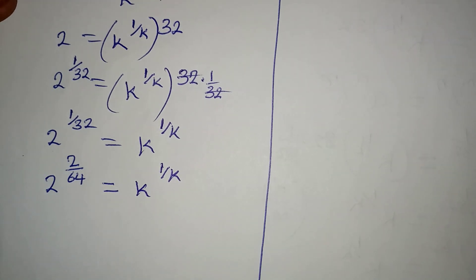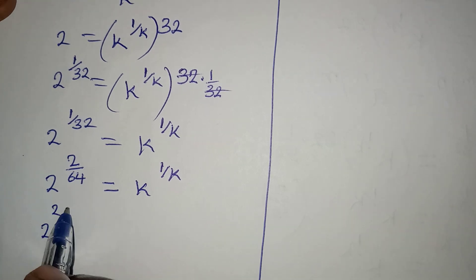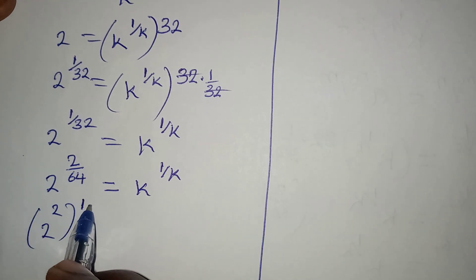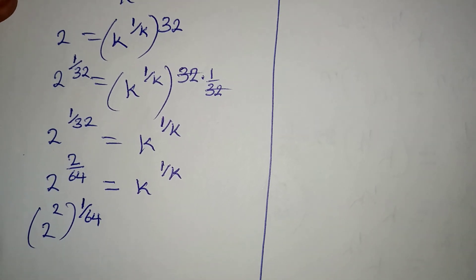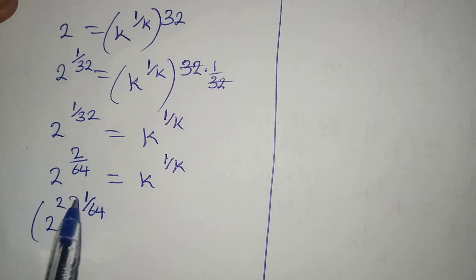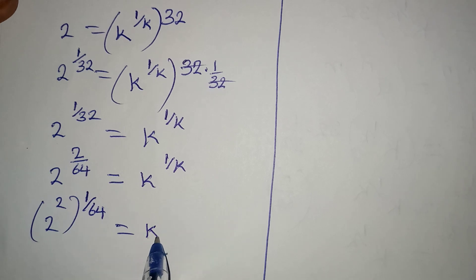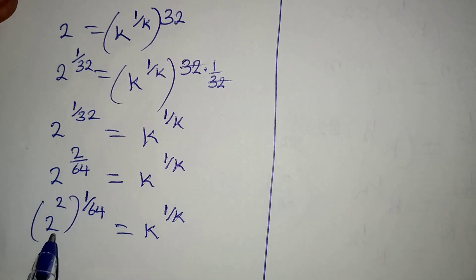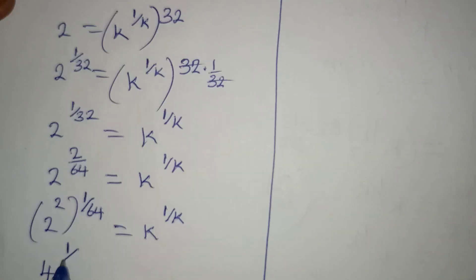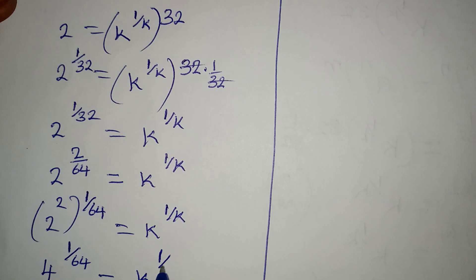This means that we are having 2 to the power of 2 times 1 over 64. They are still the same thing, because I can multiply 2 by 1 to get 2 over 64. And this is equal to k to the power of 1 over k. Now, 2 to the power of 2 is 4, so 4 to the power of 1 over 64 equals k to the power of 1 over k.